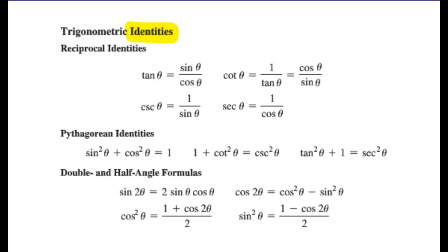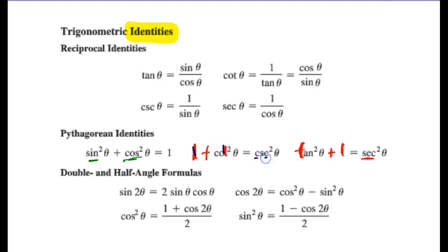Here are some more trig identities. We've already covered sine² + cosine² = 1. Another that keeps popping up: I call it the '1 plus 1 rule.' Tangent² θ + 1 = secant² θ. And 1 + cotangent² θ = cosecant² θ — remember two C's. The double-angle identity for sine also creeps up. I'd hold you responsible for memorizing the double-angle formula for sine; I'll give you the cosine double-angle formulas if needed.